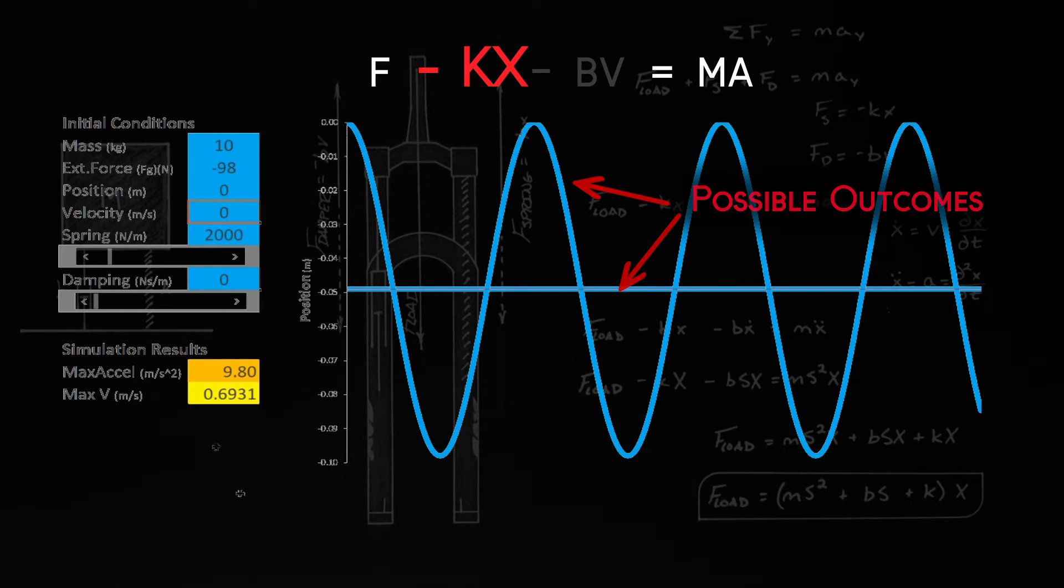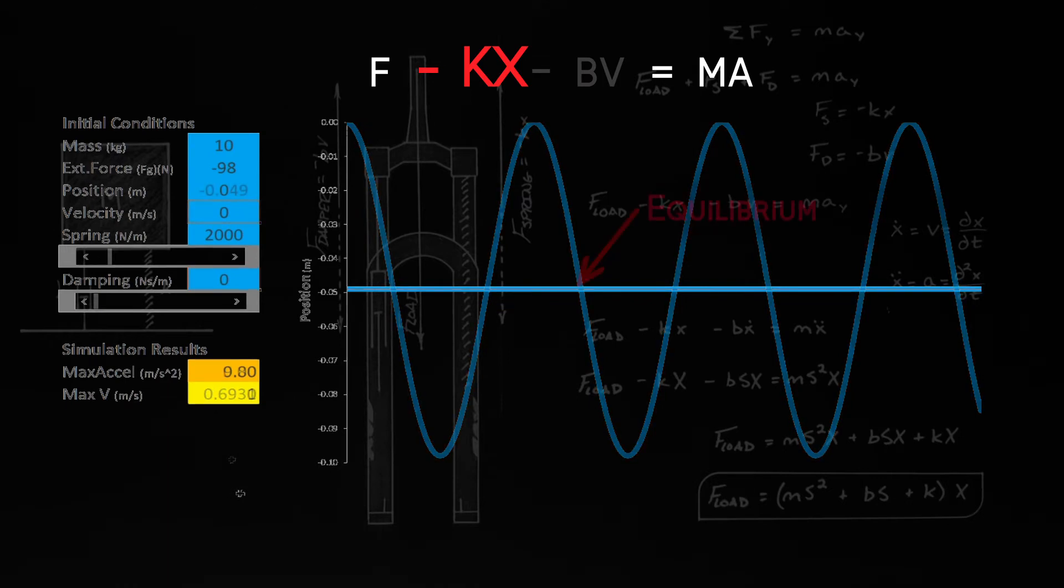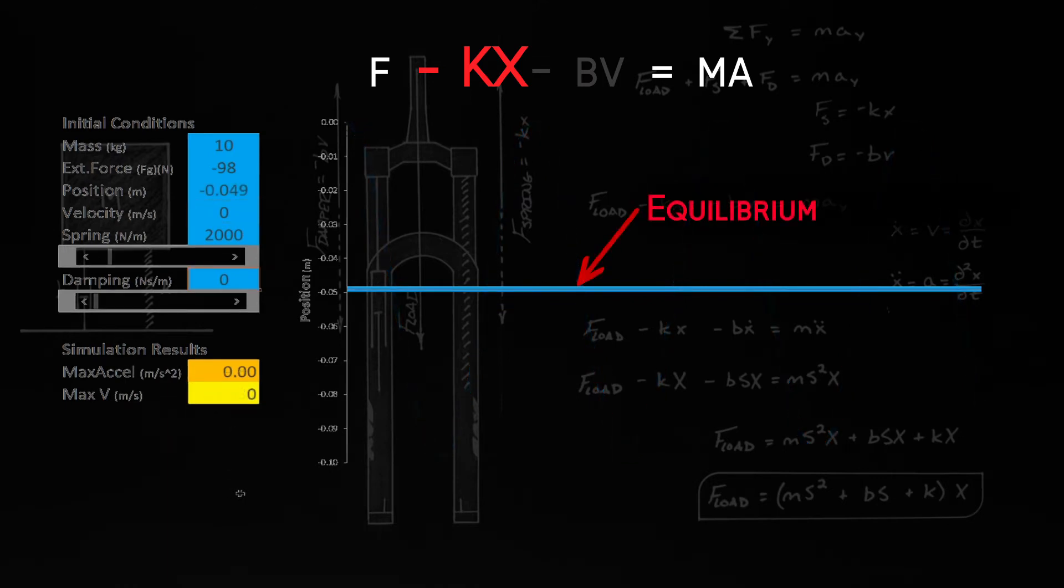Think back to your first day of physics: if you integrate acceleration to find velocity, you need to interject the initial velocity. It's that plus C that your calculus teacher's always bugging you about. And our equation of motion is no different.